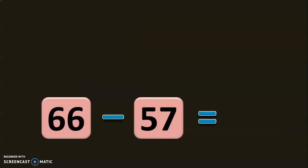Let us do one more example. 66 minus 57. In forward subtraction, what do you do? To reach from 57 to 66, we need 58, 59, 60, 61, 62, 63, 64, 65, 66.